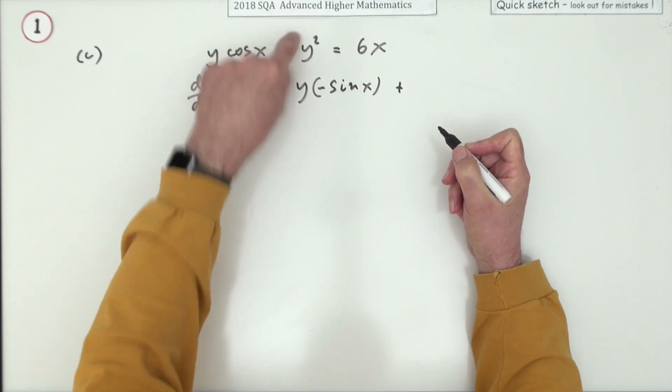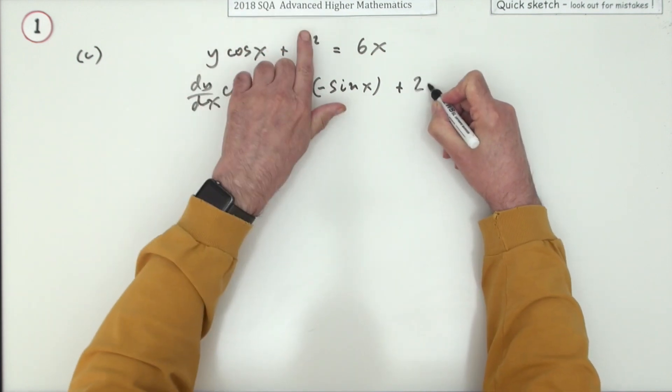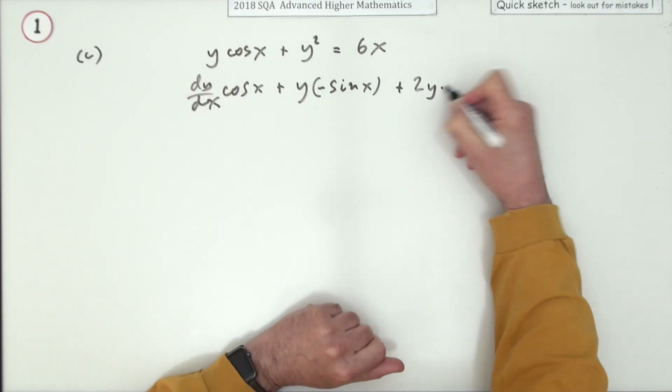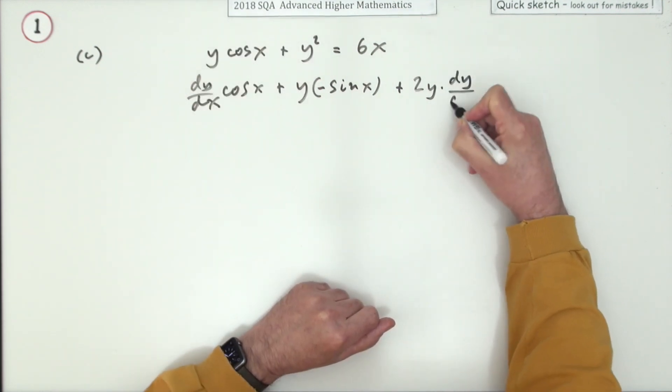Differentiating this, now that's a function of a function. Y is a function of x. So it'll be outer function first, so two times whatever it was, multiplied by the derivative of that with respect to x, so dy/dx.